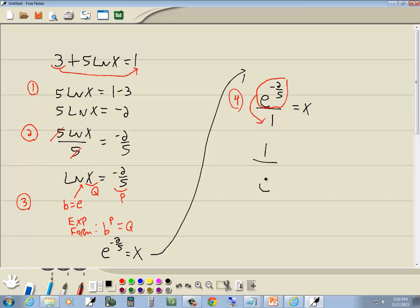When you move anything opposite of where it's at in a fraction, the sign of the exponent changes. So the e to the negative 2 fifths becomes an e to the positive 2 fifths equals x. And that would be our answer.